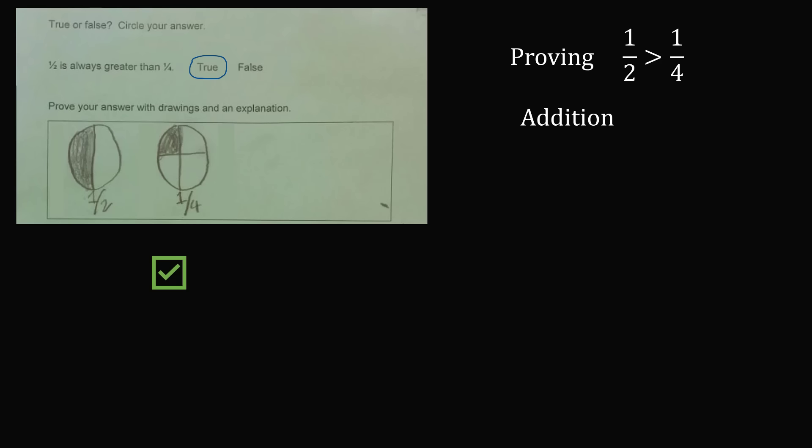Another way is by considering addition. 1 over 4 plus 1 over 4 is equal to 2 over 4, which equals 1 over 2. And therefore, 1 half is greater than 1 over 4.